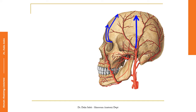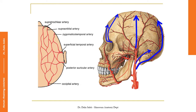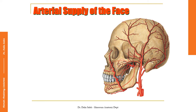We have the supratrochlear and, lateral to it, the supraorbital arteries. This is the superficial temporal artery, one of the two terminal branches of the external carotid. This is the posterior auricular and the occipital arteries, branches from the posterior aspect of the external carotid artery. Now we can see the five branches that supply the scalp — three in front of the auricle and two behind it. In this top view we can see the auricle; in front of it lie three branches: the superficial temporal artery, the supraorbital, and the supratrochlear arteries. Behind the auricle we have the posterior auricular and the occipital. They all communicate with each other, so the scalp is one of the places where internal carotid artery branches communicate with external carotid artery branches.